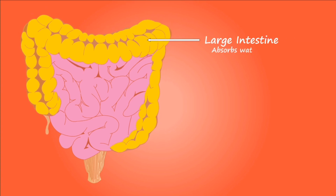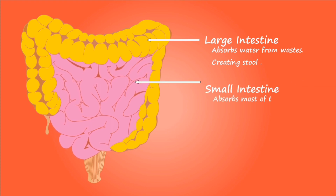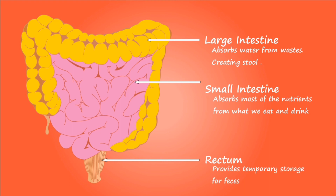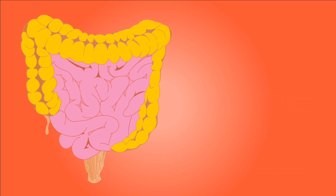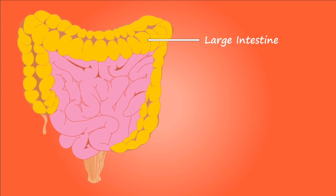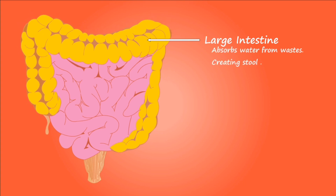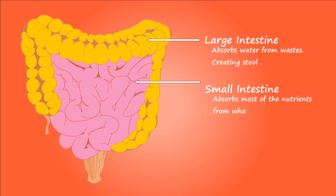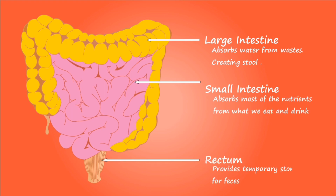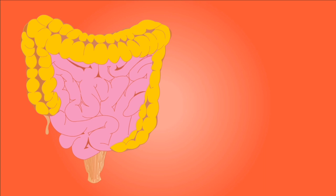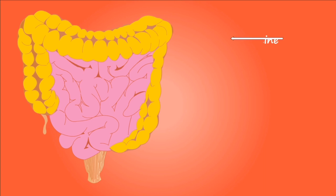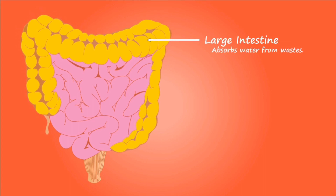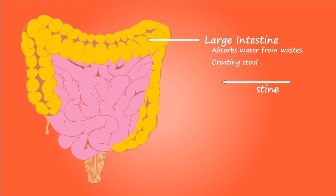The small intestine extends from the pyloric sphincter to the ileocecal valve, where it empties into the large intestine. The small intestine finishes the process of digestion, absorbs the nutrients, and passes the residue onto the large intestine. The liver, gallbladder and pancreas are accessory organs of the digestive system that are closely associated with the small intestine.